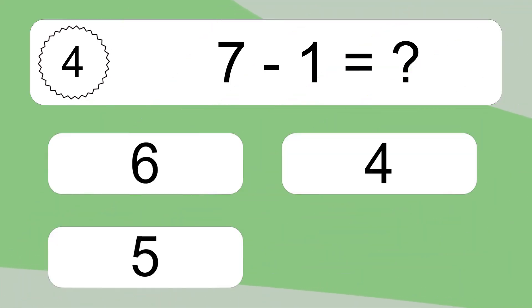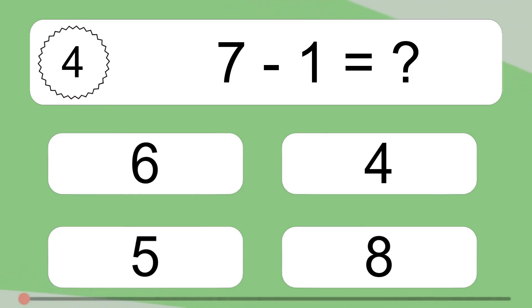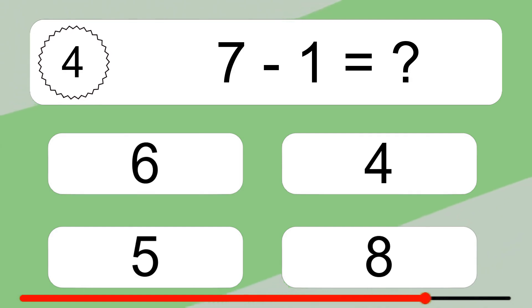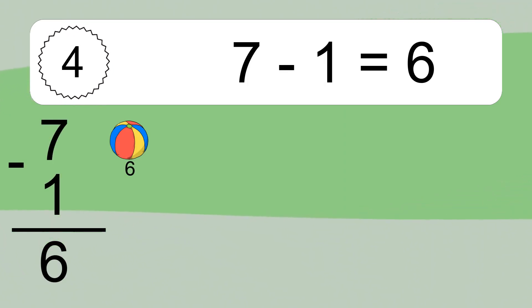7 minus 1 equals what? 7 minus 1 equals 6. Let's count it: 6.